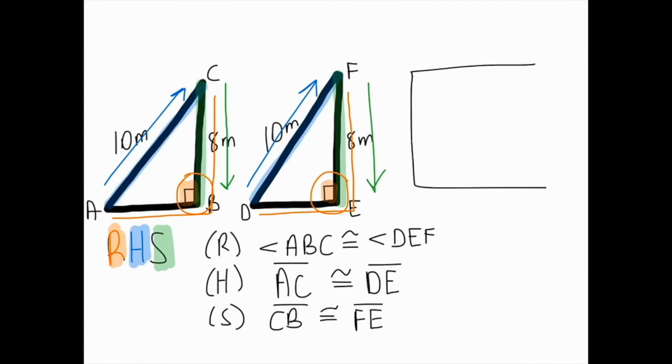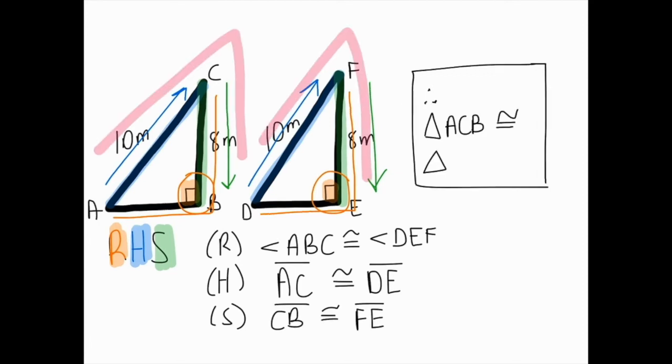And then I'll have to make my congruence statement. So therefore triangle ACB is congruent to triangle DFE. And I'll also have to put in brackets at the end the rule that I used which was RHS.